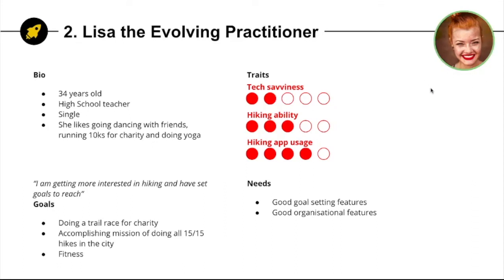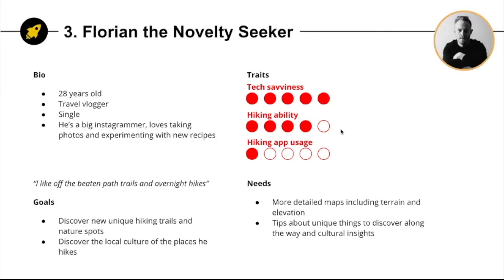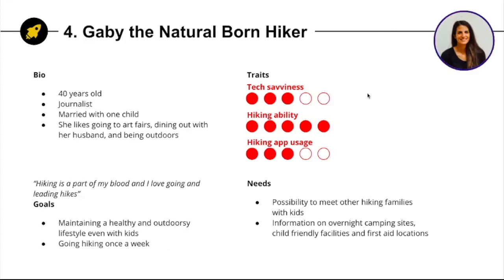Highlight user motivations and pain points. In our example, we use goals and needs. Use icons to emphasize information. Use data visualization — horizontal dotted or bar charts, as in our example. Include whatever is helpful for your company. For instance, as Trailwalker is an app, we decided to talk about tech savviness. Keep layouts consistent — the better the personas look, the more likely they are to be used.